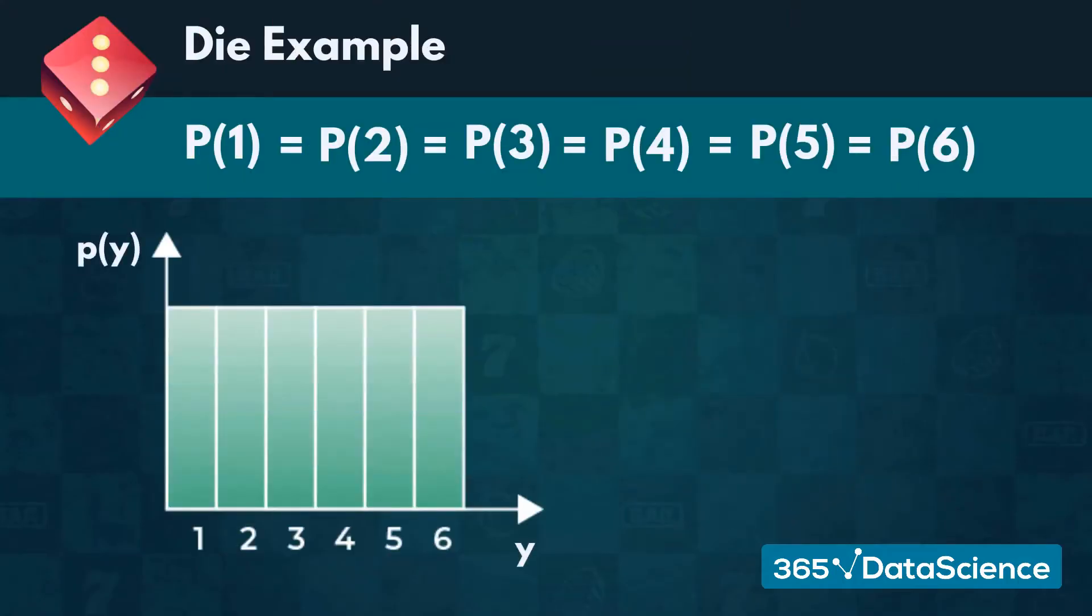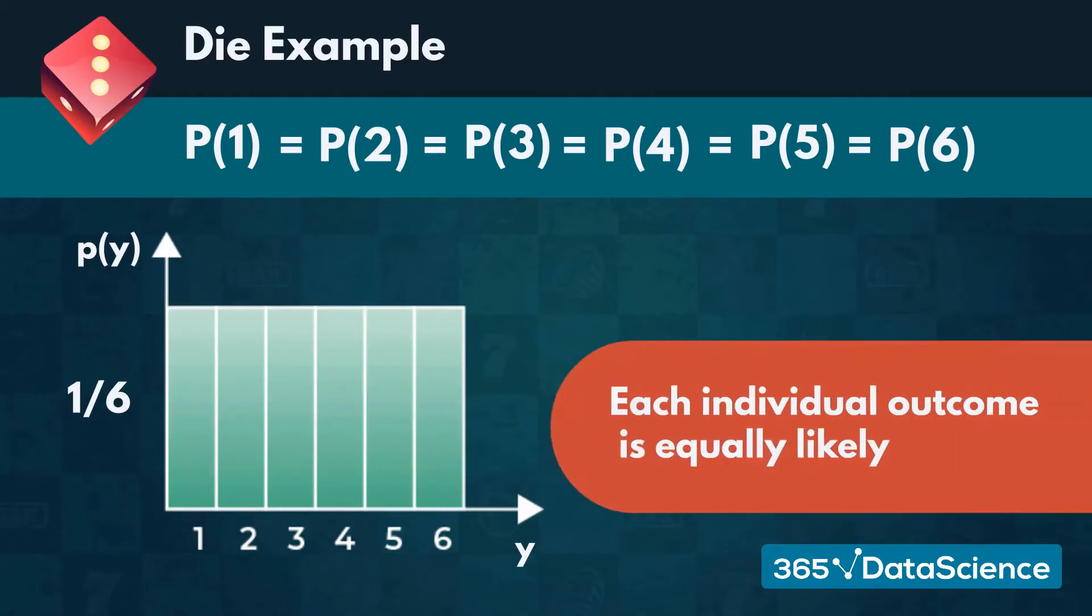The graph of the probability distribution would have six equally tall bars, all reaching up to one-sixth. Many events in gambling provide such odds, where each individual outcome is equally likely.